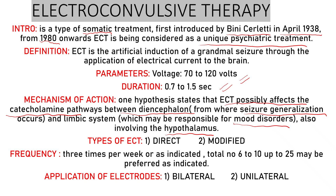There are two types of ECT: direct and modified. Direct means ECT was given without anesthesia or muscle relaxant — shock was given directly to the patient. Modified means the procedure was modified: before giving ECT, general anesthesia and a muscle relaxant are administered. Direct type is not used nowadays; modified ECT is the current standard.